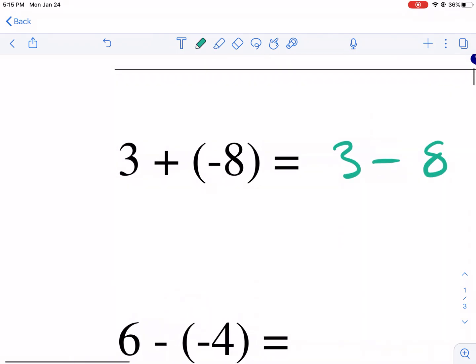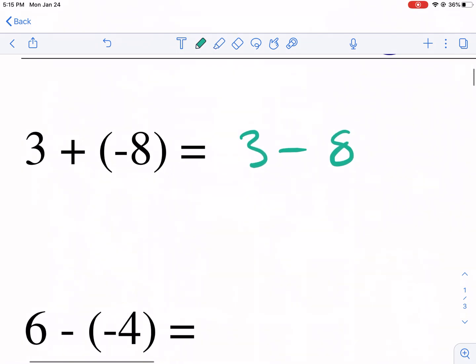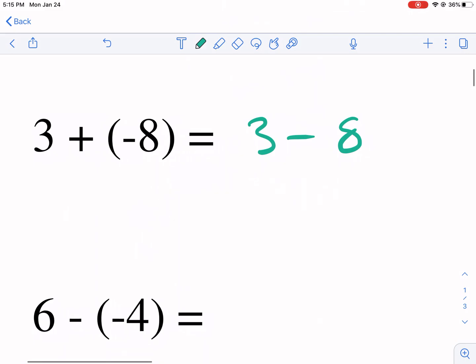So three minus eight is the exact same thing as three plus a negative eight. Either one, we're going to start on the number three, and then we're going to move in the negative direction.